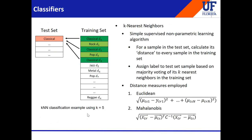The first classifier we used is the K-nearest neighbor algorithm, which is a simple supervised non-parametric learning algorithm. For every song in the test set, you calculate its distance to every other song in the training set. Then you get the K nearest neighbors of the test song. For K equal to 5, you have five songs, and you apply a simple majority voting rule. For example, if three of the K neighbors are labeled classical, the test song is labeled as classical.